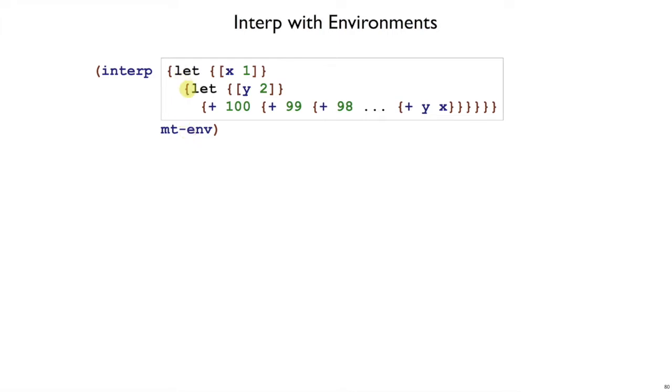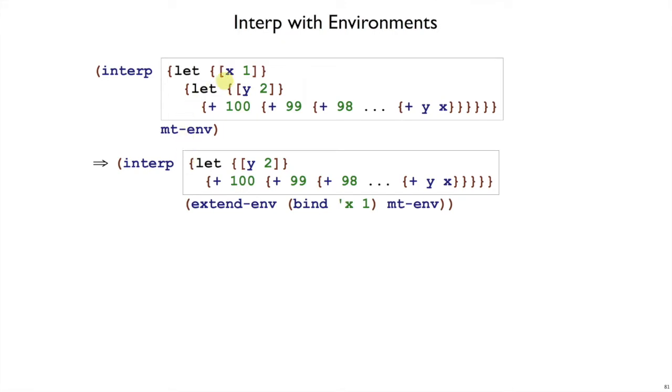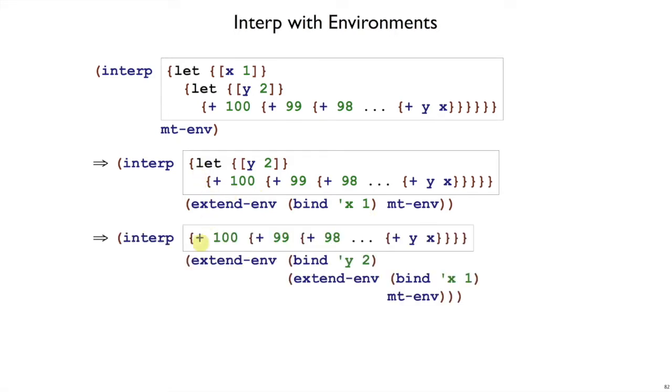If we are interpreting this let expression in the empty environment, then the way that is done is interpreting this 1 and adding a binding to the environment. x is bound to 1, and then we interpret the body of the let. And again, in this case, we're going to interpret the body of the let where we've extended the environment once again.